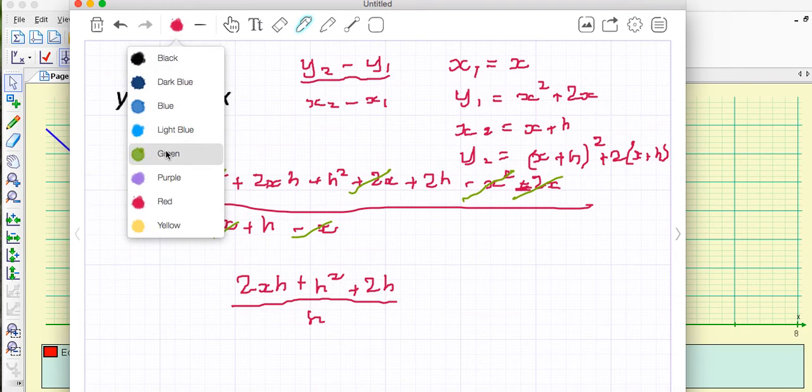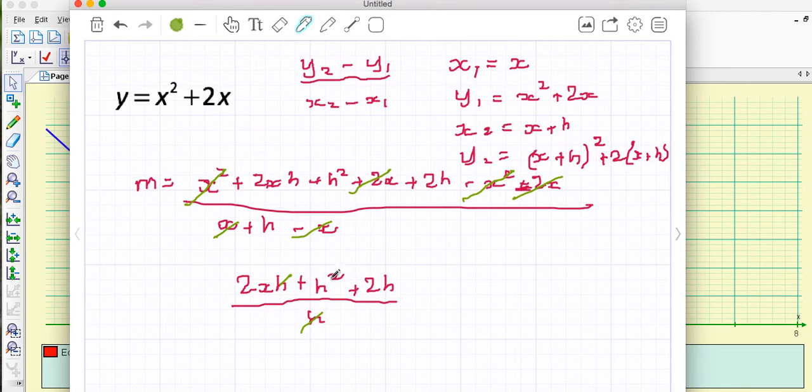Well we've got the same thing happening here the h's can cancel, one of those h's can cancel out there and the h cancels out there so I've now got something that looks quite good which is 2x there's an h there remember. Now remember what happens to h, h is getting smaller and smaller and smaller so h goes towards 0 and m becomes 2x plus 2.